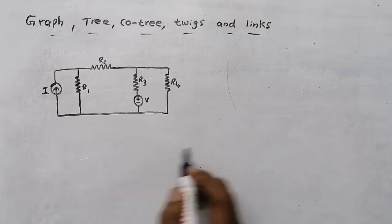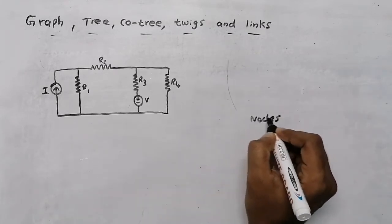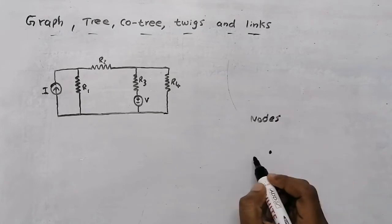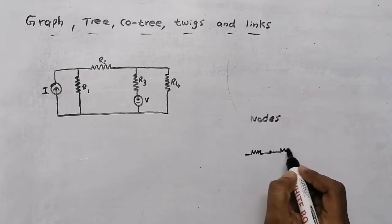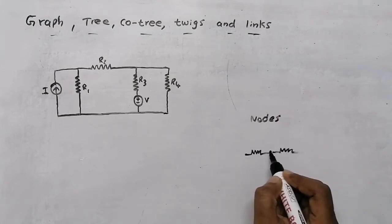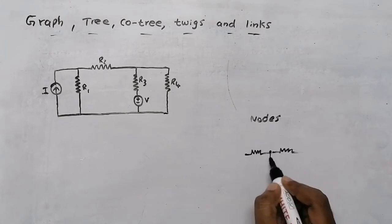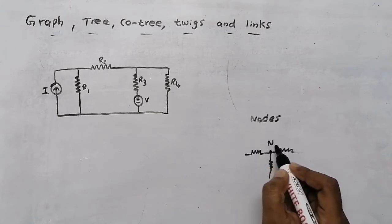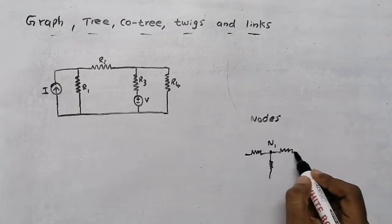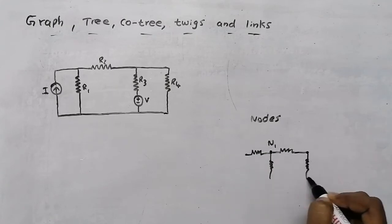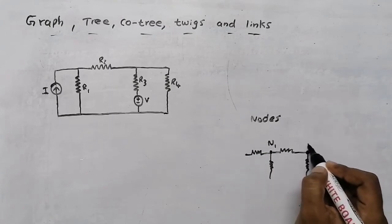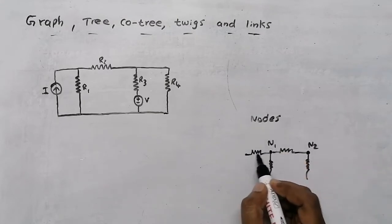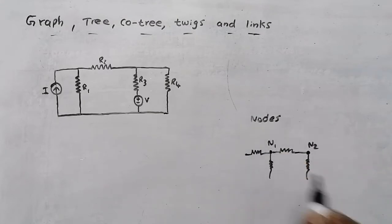For drawing a graph, first you need to know the number of nodes. Nodes means it is a point at which two or more elements are connected. At one point, two or more elements are connected — that is node one. At another point where another element connects — that is node two. A node is a point at which two or more elements are connected.